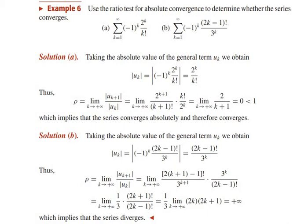For subdivision (b), the series is sigma k=1 to infinity of (−1)^k · (2k−1)! / 3^k. The general term u_k = (−1)^k · (2k−1)! / 3^k. Taking the absolute value: |u_k| = (2k−1)! / 3^k. We apply the ratio test and substitute u_{k+1} and u_k: rho = lim(k→∞) of [(2k+2−1)! / 3^(k+1)] · [3^k / (2k−1)!].